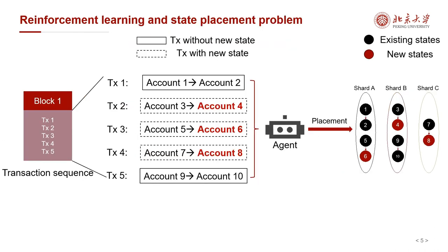As a block can be viewed as a sequence of transactions that contain many new states to be placed, state placement can be viewed as a sequential decision problem suitable for reinforcement learning approaches. Additionally, since the change of characteristics of sharding blockchains does not have an explicit pattern as it evolves, RL can adapt dynamically to capture changes that heuristics may fail to grasp.